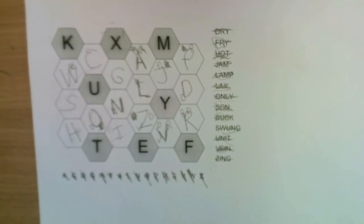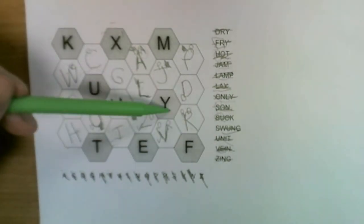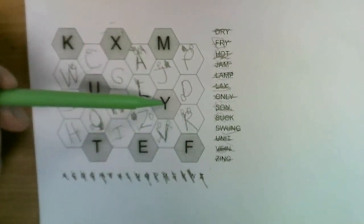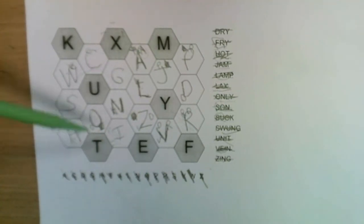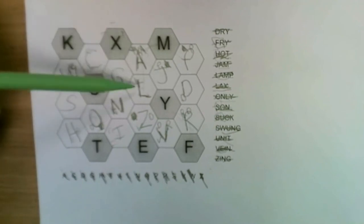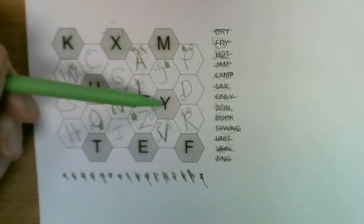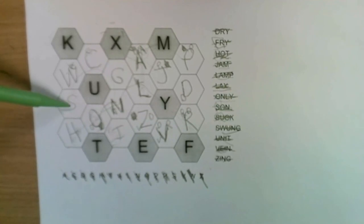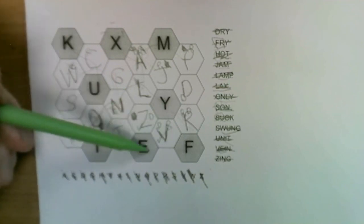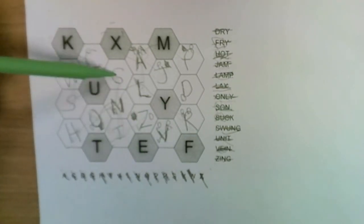So let's check we've solved the puzzle. We've crossed off every letter, that's a good sign. Now let's just check the words in the grid: dry, fry, hot, jam, lamp, lax, only, son, suck, swan, unit, vein, and zing. Okay great, so that's the puzzle solved.